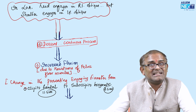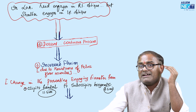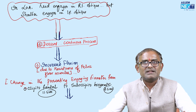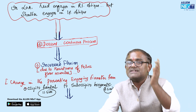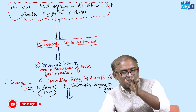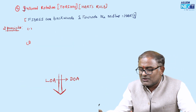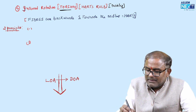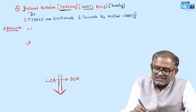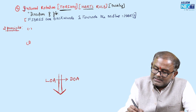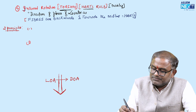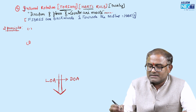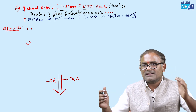After flexion, there will be internal rotation. Internal rotation is due to the arrangement of fibres of the levator ani muscle, which are directed towards the midline. Internal rotation is nothing but torsion or twisting, which is explained by Odd's rule.